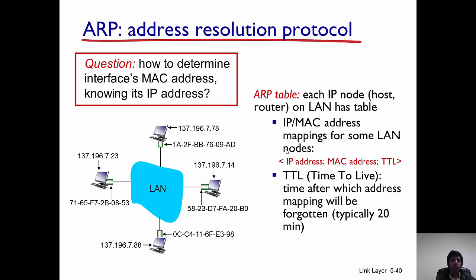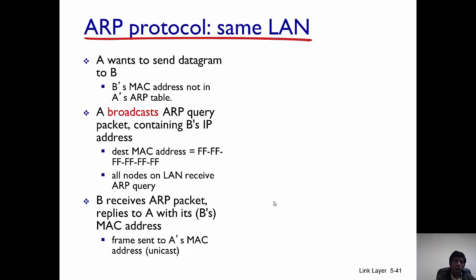The ARP table has a bunch of entries, and each entry is a mapping between an IP address and a MAC address, along with a TTL — time to live. This means the IP address maps to a particular MAC address for a given time to live; after that time has elapsed, the entry is dropped from the ARP table. The ARP protocol helps a host determine the MAC address of another host. ARP works within the same LAN because you need MAC addresses to send a datagram from one node to another.